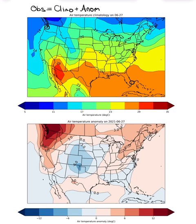Let's start with Seattle first. Looking at Seattle's climatology, it lies somewhere between the 14°C and 17°C contour lines. There's no 17 label, but going by threes from 14 to 20, the contour in between is 17. So let's estimate the climatological temperature in Seattle is 15 degrees Celsius.